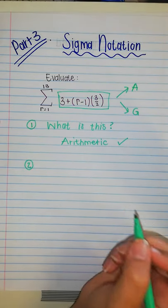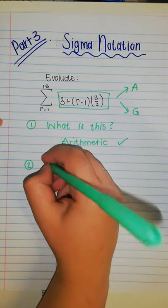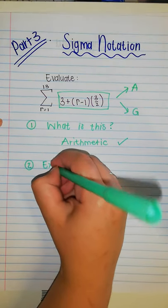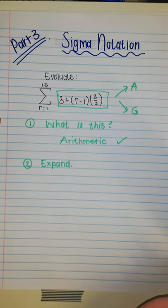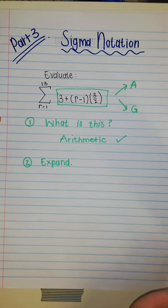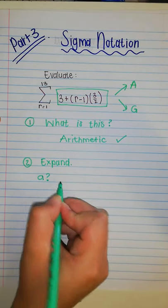Step two, okay, I'm going to say, okay, expand. And what this means is, I'm going to write out the series. Okay, first, I need my A. So, what is my A?